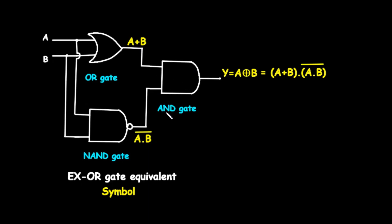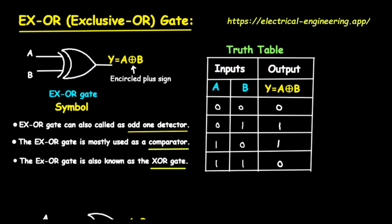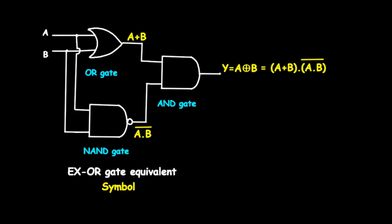These two intermediate results — the OR gate output (A+B) and the NAND gate output (negation of A·B) — become the inputs for the final AND gate. The AND gate produces a high output only if both its inputs are one. So the final output Y equals (A+B) AND (negation of A·B), which is logically equivalent to A XOR B.